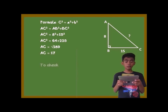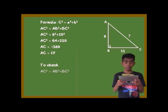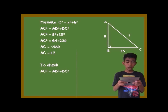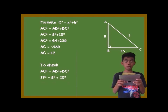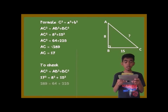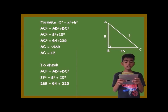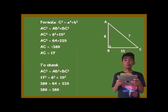To check: AC squared is equal to AB squared plus BC squared. 17 squared is equal to 8 squared plus 15 squared. Then 289 equals 64 plus 225, and they are both equal to 289.